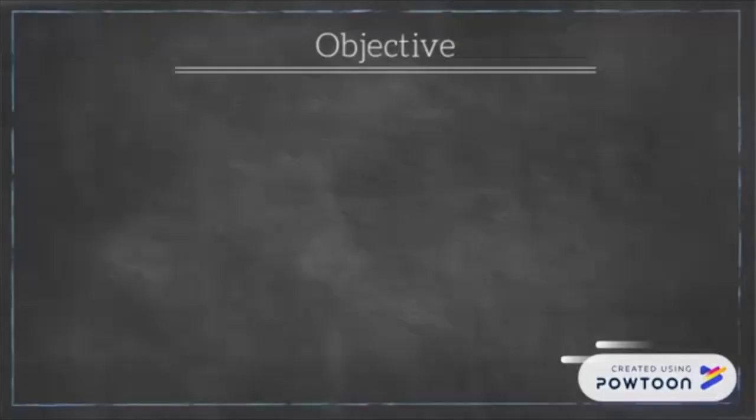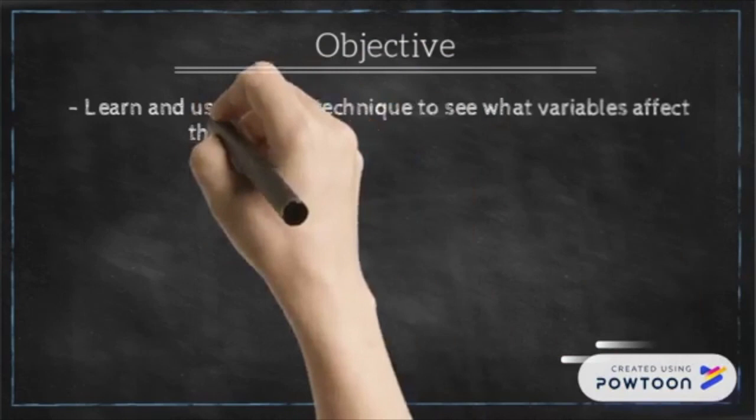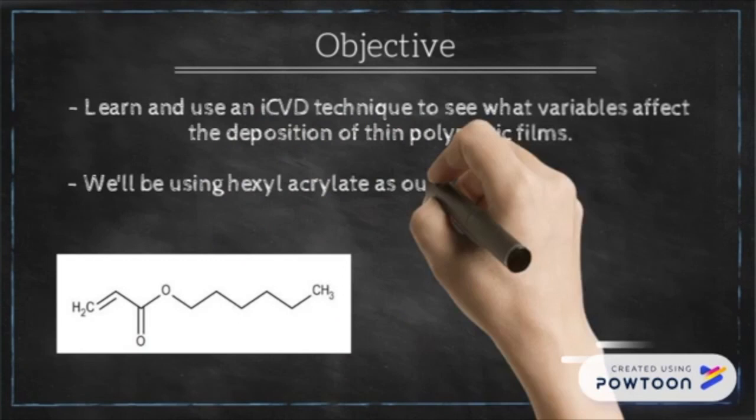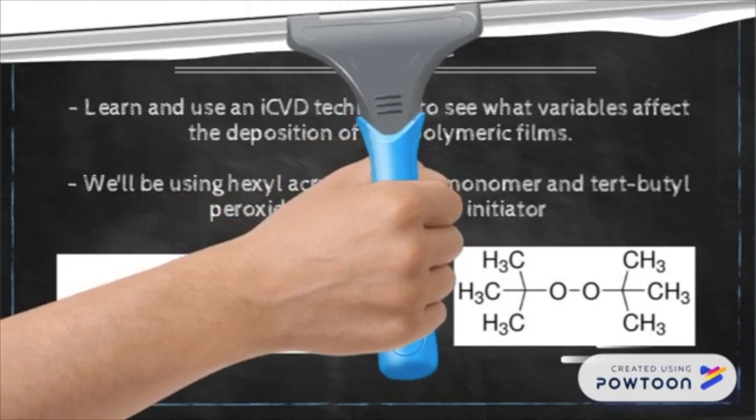The objective of our experiment is to learn and use an ICVD technique to see what variables affect the deposition of thin polymeric films. We'll be using hexylacrylate as our monomer and tert-butyl peroxide or TBPO as our initiator.